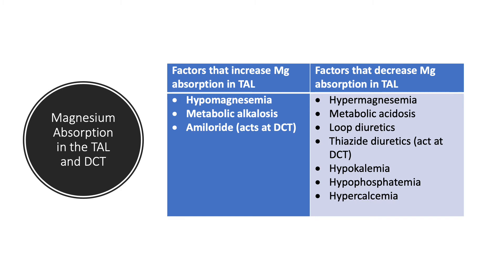Factors that decrease magnesium absorption in the TAL — causing magnesuria — include hypermagnesemia (too much magnesium leads to more urinary excretion), metabolic acidosis, and loop diuretics, which increase excretion of magnesium, potassium, sodium, and phosphorus. Thiazide diuretics act at the DCT and cause magnesium loss. Hypokalemia increases magnesium loss — this is why if you have hypomagnesemia, fix potassium, and vice versa. Hypophosphatemia decreases magnesium absorption, and hypercalcemia — if calcium is up — leads to loss of magnesium.